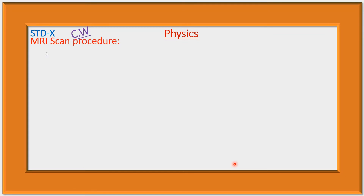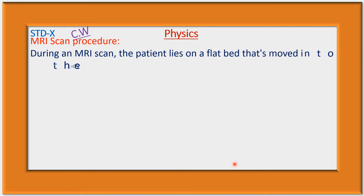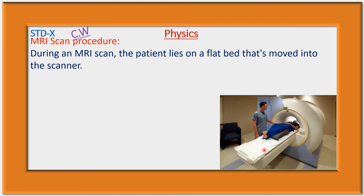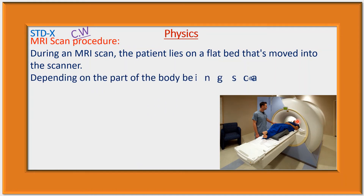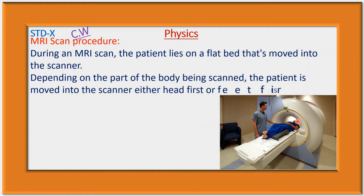During an MRI scan procedure, the patient lies on a flat bed that is moved into the scanner. The patient is moved into the scanner either head first or feet first, depending on the part of the body being scanned.